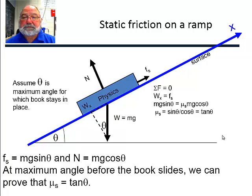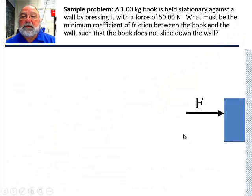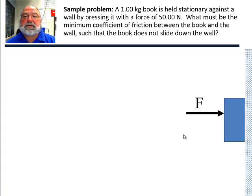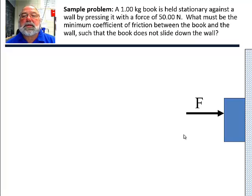Here's a sample problem. We have a one kilogram book held stationary against a wall by pressing it with a force of 50 newtons. What must be the minimum coefficient of friction between the book and the wall such that the book does not slide down the wall?